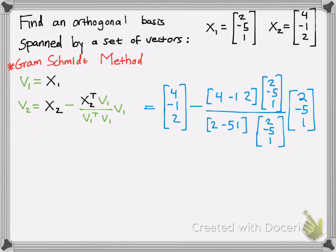Then you're going to do some math here. So just some simple matrix multiplication. So you should get 15 over 30. Let's see, 4 times 2 is 8. Negative 1 times negative 5 is 5. Plus 2 would give you 15. And then we get that over 30. That's a scalar there. Multiply it by the vector. So we can say 15 over 30 is 1 half.